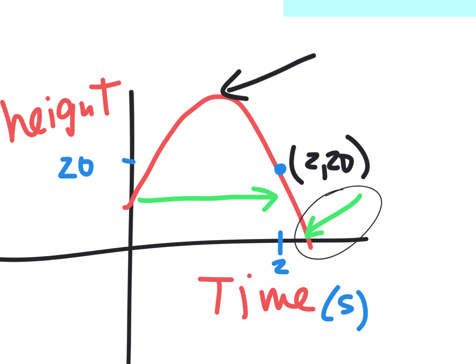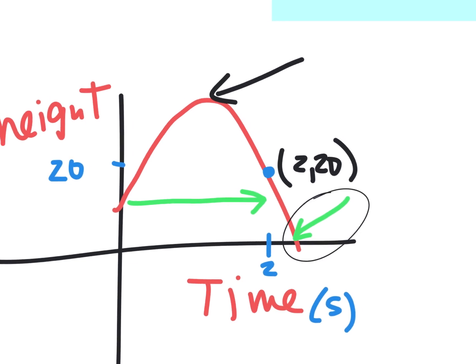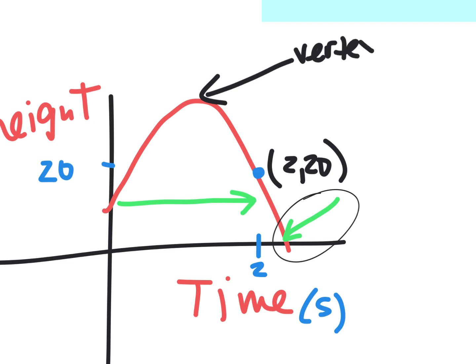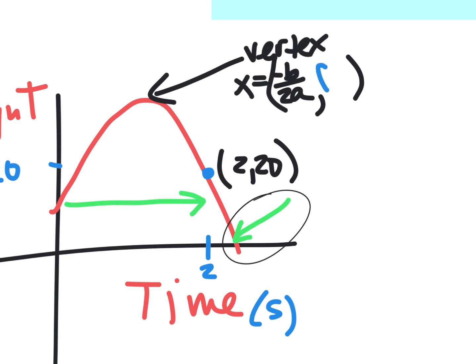If I ask you for the highest spot, it's nice to know it's the vertex, but how do you find it? This is called the vertex, and you get the x-value of the vertex using x = -b over 2a. Then to get the y-value, take f of that — f(-b/2a) — meaning you plug that number into the function. That's how you find that spot: find the vertex of whatever the function is.